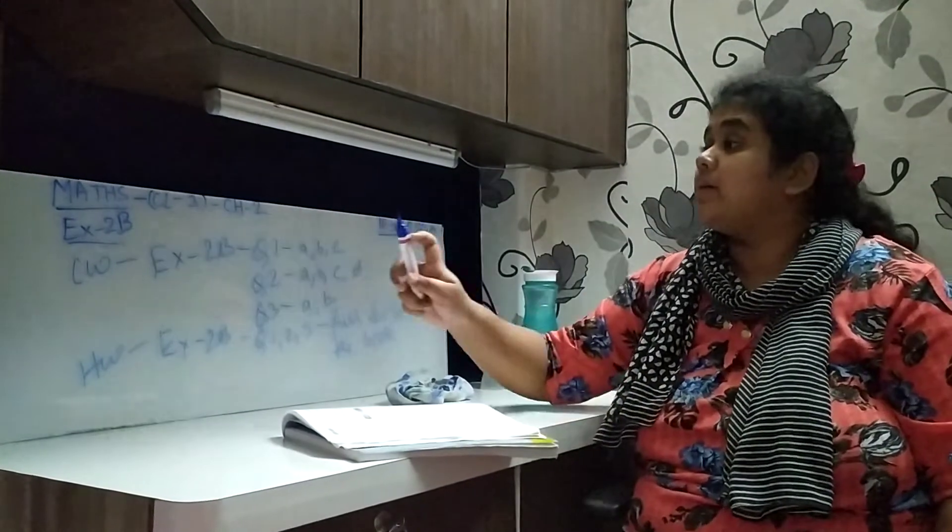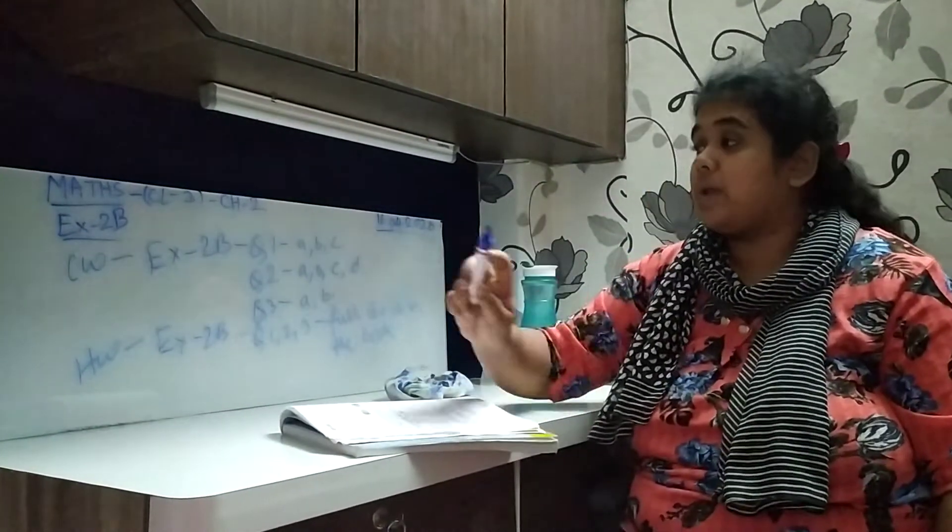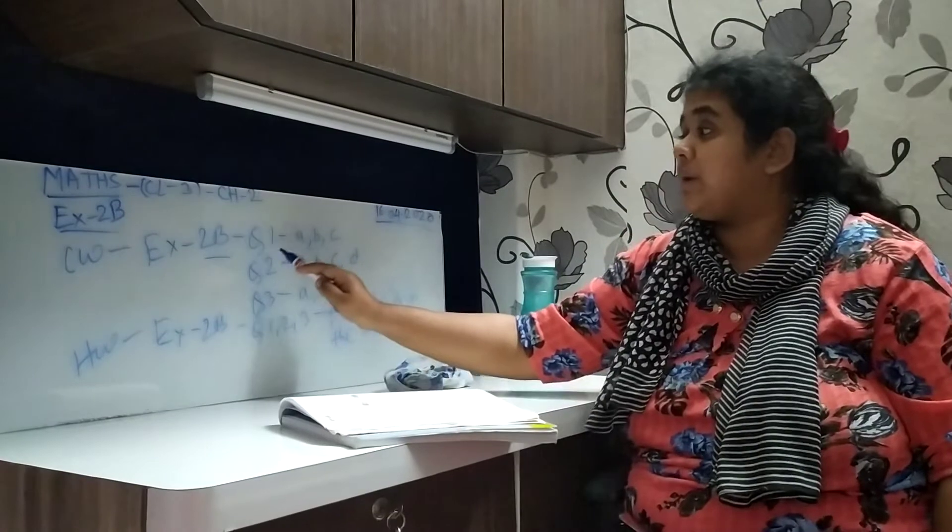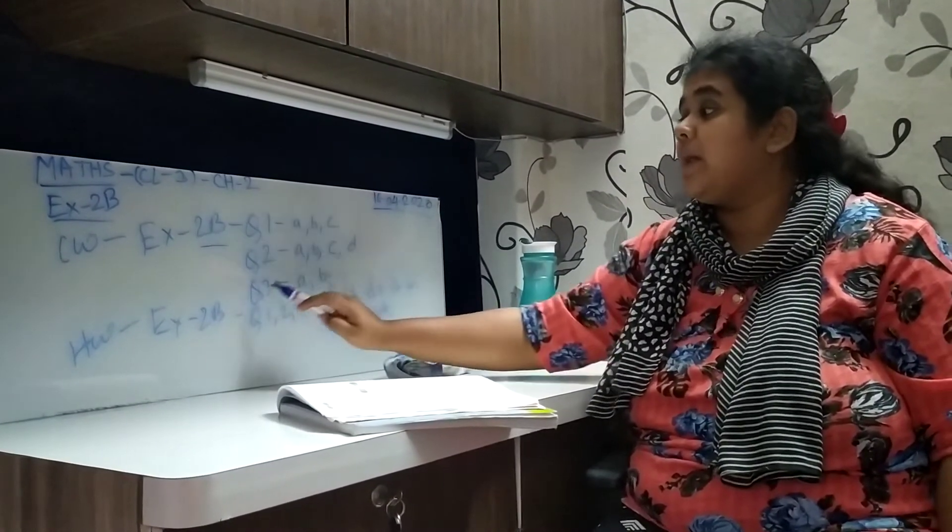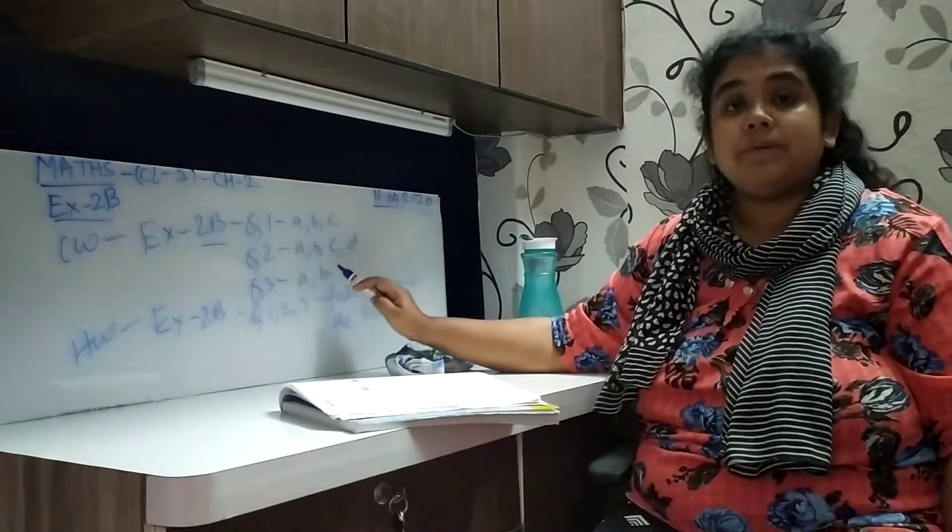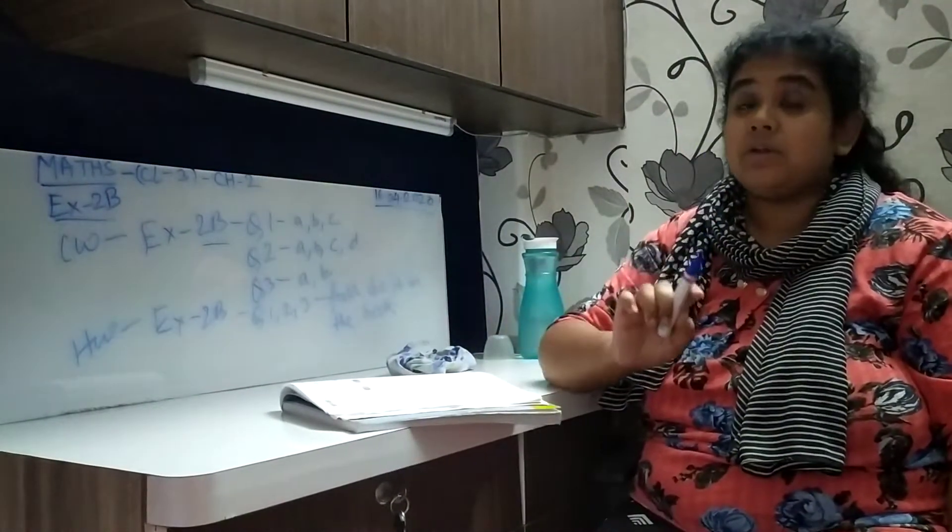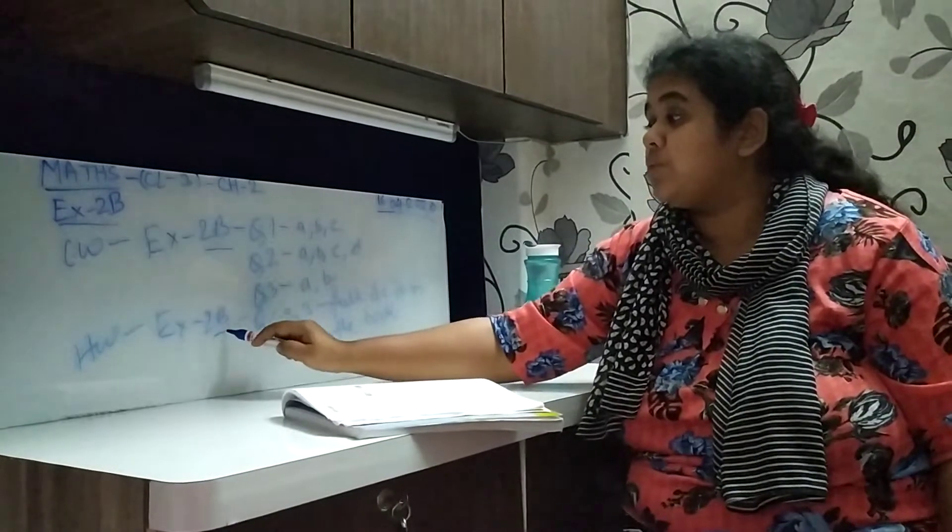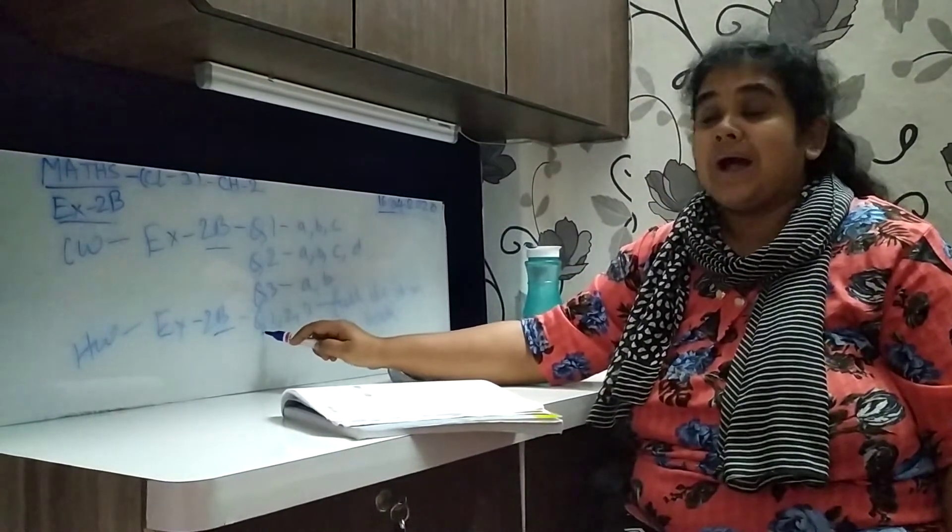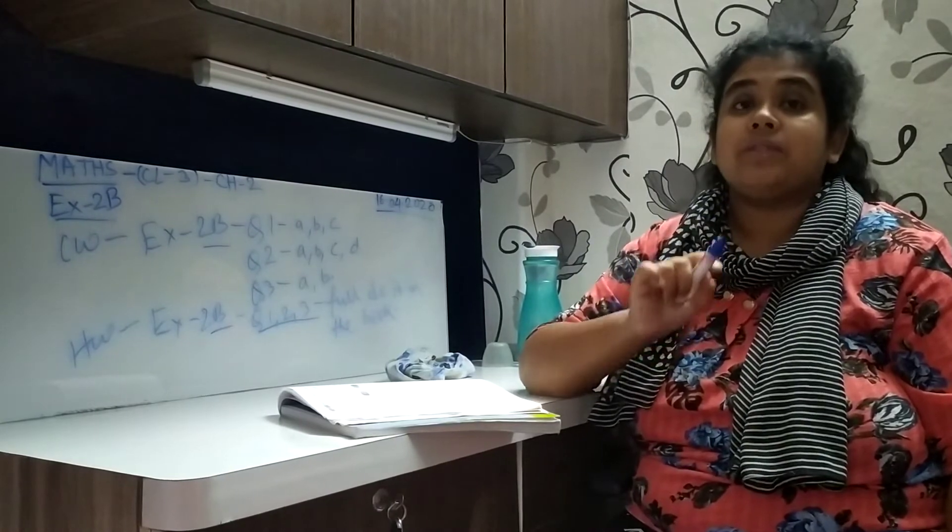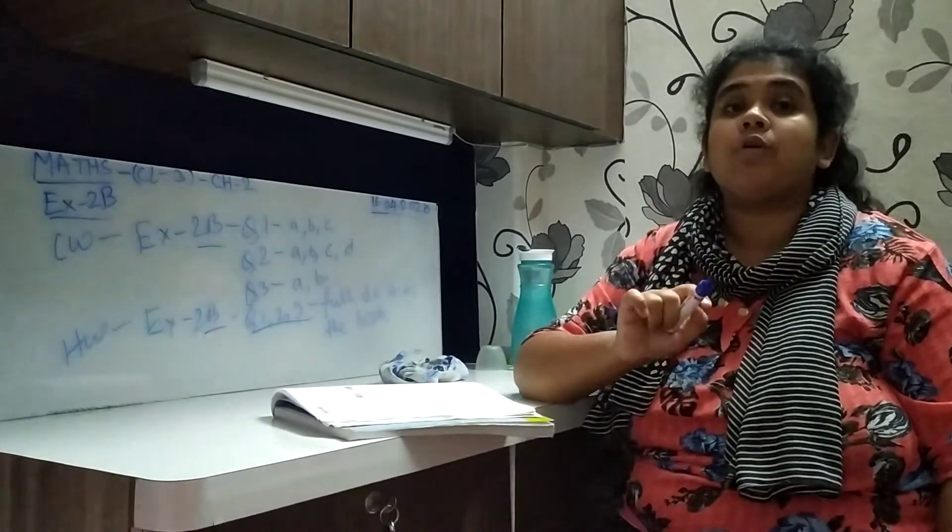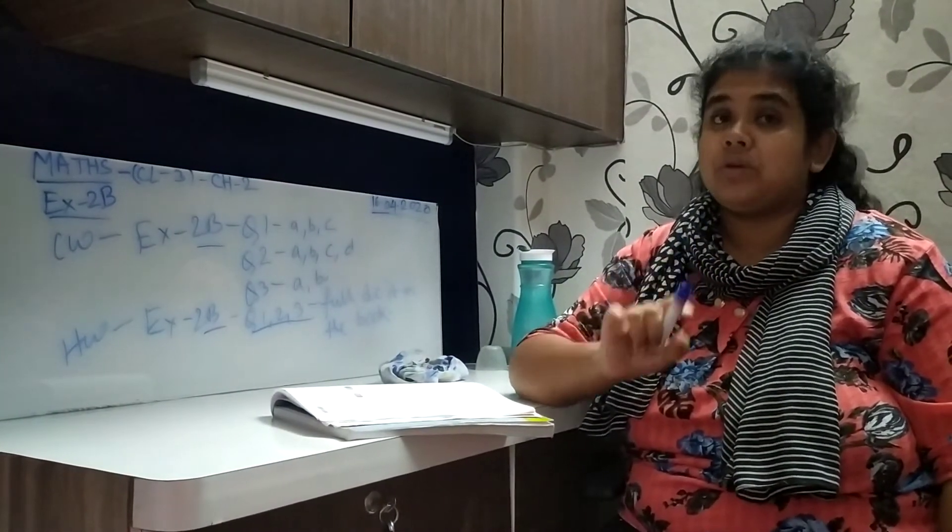Now, the CW we have done today. Exercise 2B. Question number 1, A, B, C we have done. Question number 2, A, B, C, D we have done. Question number 3, A and B we have done. And I have given you the homework as exercise 2B question 1, 2, 3 full. Do it in the book. Then practice it in the rough copy for 2 or 3 times.